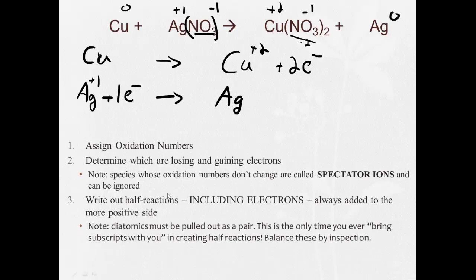If there are diatomic things, H2, et cetera, they have to be pulled out as a pair. This would be the only time you bring subscripts with you in creating half reactions. Alright, so normally we would leave any subscripts, we would leave them behind. We wouldn't write them here. But we'll get to that when necessary.